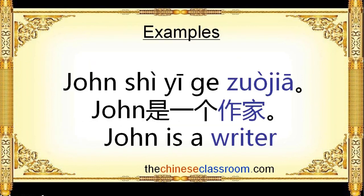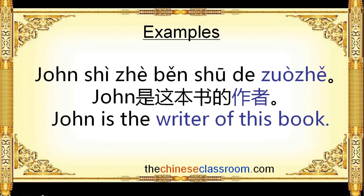Let's check the examples again. John 是一个 作家. John 是这本书的作者.